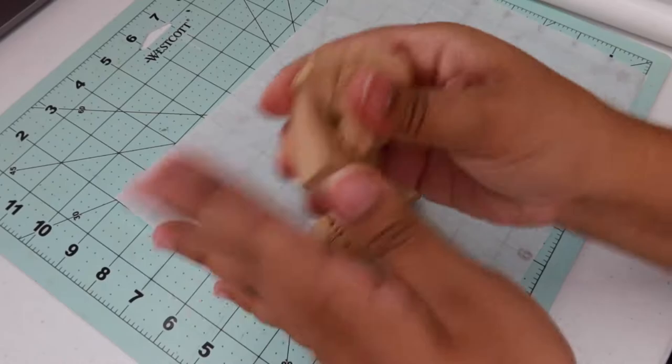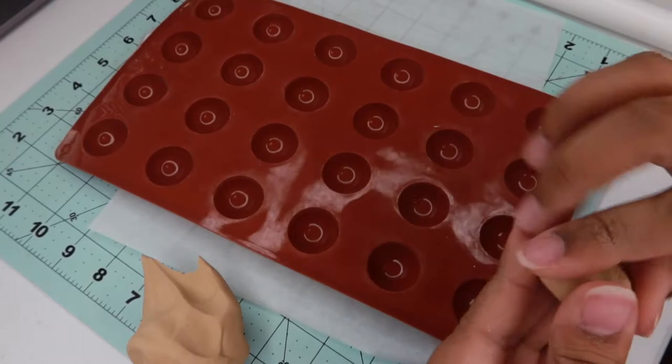First things first, I grab both blocks of tan clay and start putting them into my hands to condition them. Next thing you want to do is rip off little bits and pieces, roll them into little circles, and start placing them inside your mold.